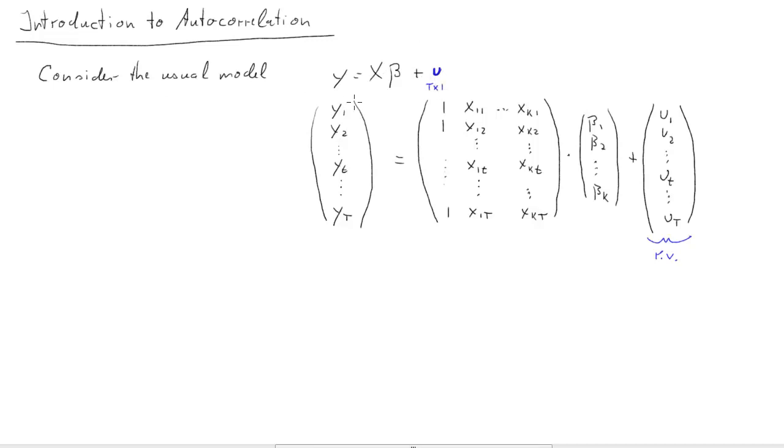Now let's look at the dimensions. u is t by 1, y is t by 1, x is denoted as t by k. But right now we have k plus 1 columns, so I'll change that x1 to x2, and then we have actually k columns here, and then beta is k by 1.